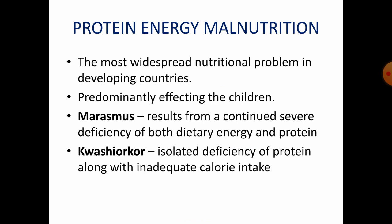Protein Energy Malnutrition is a widespread nutritional problem mostly found in developing countries, predominantly affecting children. It is mainly divided into Marasmus and Kwashiorkor. Marasmus results from a continued severe deficiency of both dietary energy and protein. Kwashiorkor is an isolated deficiency of protein along with inadequate calorie intake.